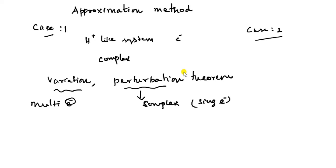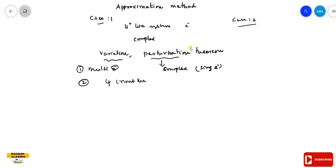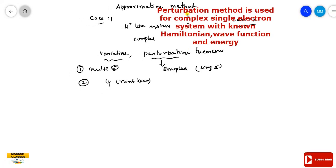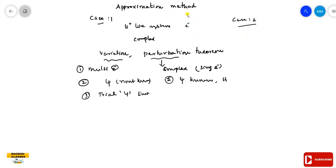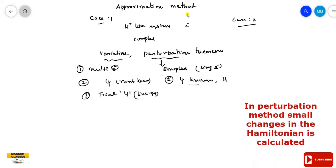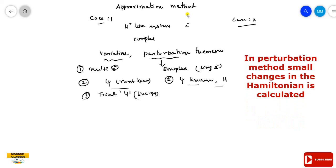In this video we will cover perturbation theory. For multi-electron systems, the wave function is not known. In this case, the Hamiltonian is known. So in variation theory, a trial wave function is created, and that energy is connected to the exact values. In perturbation theory, the Hamiltonian is known but the wave function is not known, and a trial wave function is fixed.